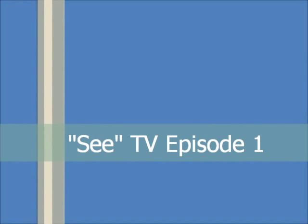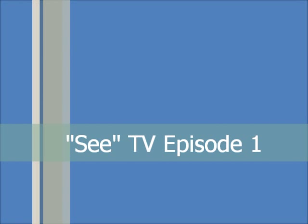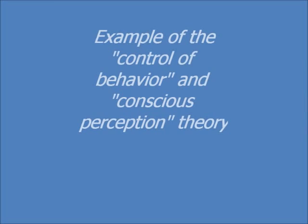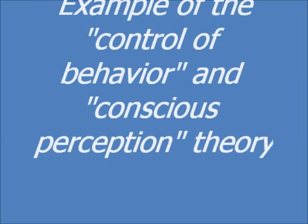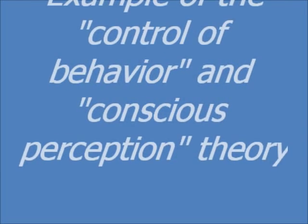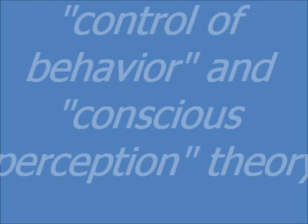Good afternoon. Today we are discussing two complementary cases in regards to the theory of control of behavior and conscious perception. This theory states the dorsal stream arbitrates the behavioral interactions with objects, and the ventral stream controls the conscious perception of the objects. These two cases help verify this theory.